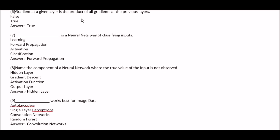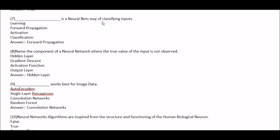Gradient at a given layer is the product of all gradients at the previous layers — false or true? This is true. Next question: blank space is a neural net's way of classifying inputs. Option A: learning. Option B: forward propagation. Option C: activation. Option D: classification. Right answer is option B, forward propagation.